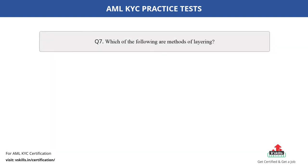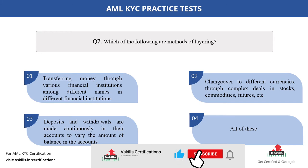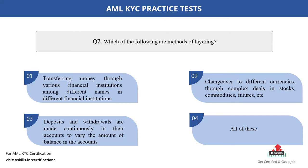Question number 7. Which of the following are methods of layering? The options are: A. Transferring money through various financial institutions among different names in different financial institutions; B. Change over to different currencies through complex deals in stocks, commodities, futures, etc.; C. Deposits and withdrawals are made continuously in their accounts to vary the amount of balance in the accounts; D. All of these. The correct answer is option D.